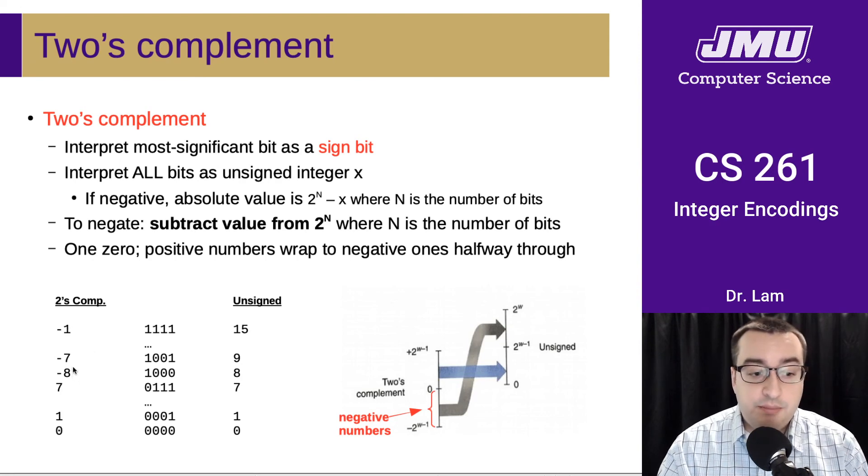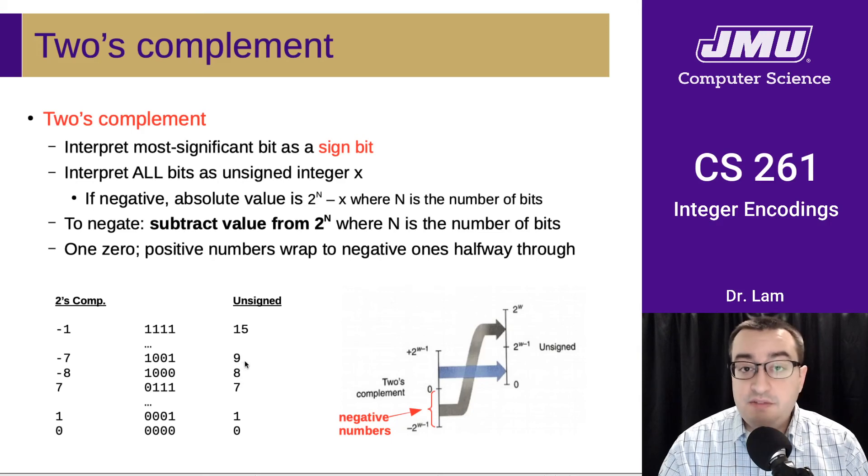Another example would be, so negative 7 here is stored as 1001. This is a negative number because the first bit is set. The unsigned value is 9, and when we subtract 9 from 16, we get 7. So that is the absolute value of this number.